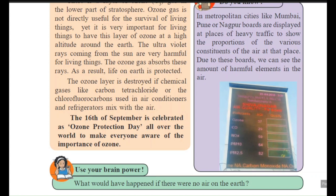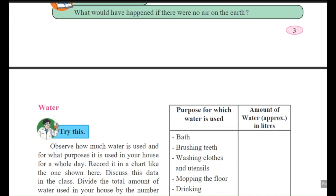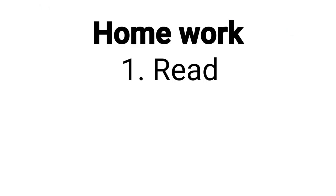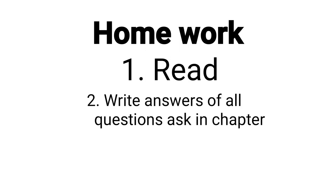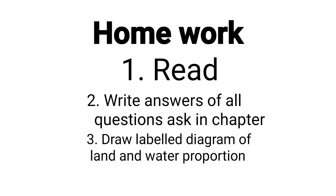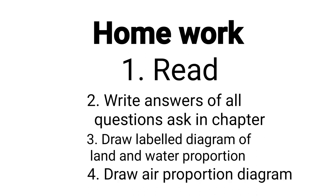Our first part — air — is finished. For homework, read the lesson very carefully. Then in your notebook, write down the questions, draw Diagram 1.2 which indicates the proportion of land and water, and draw the proportion of various gases in the air. Thank you.